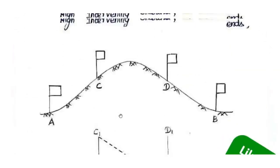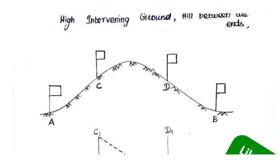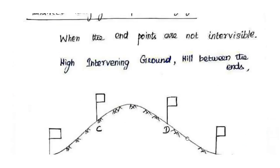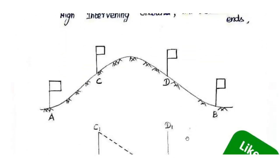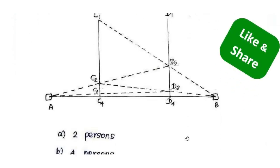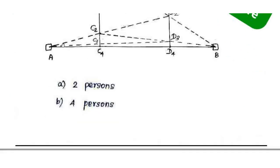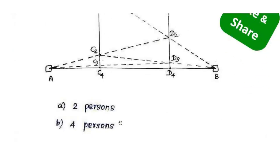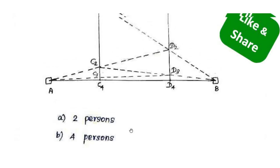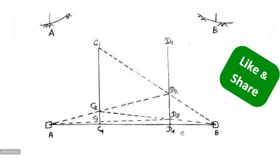When end points are not inter-visible — due to a hill or high ground between them — we use Indirect Ranging, also known as Reciprocal Ranging. In this method, we fix ranging rods C and D approximately between A and B. Initial positions are C1 and D1.